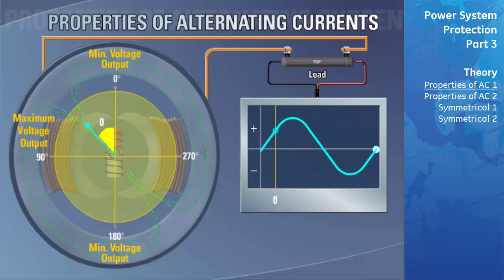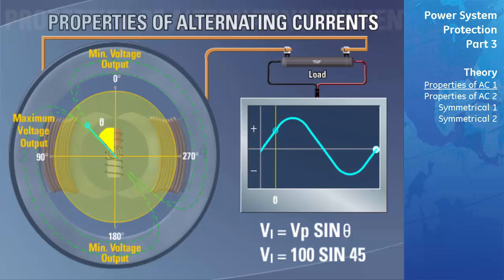The generator is constructed such that the output voltage waveform is a perfect sine wave. We can use the sine function to calculate the instantaneous output voltage vi at any given angle theta: vi = Vpeak × sin(theta). For example, to calculate the amplitude of a waveform with a peak output of 100 volts at 45 degrees: vi = 100 × sin(45°) = 70.71 volts. Therefore, at 45 degrees, this waveform has an output of 70.71 volts.